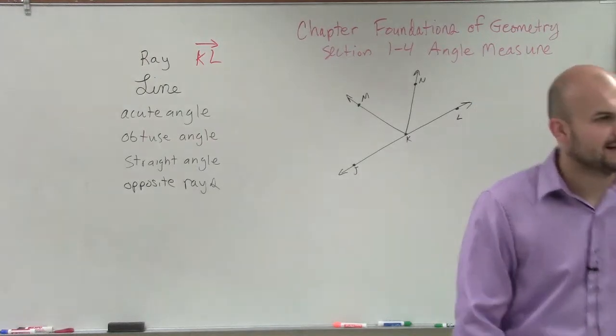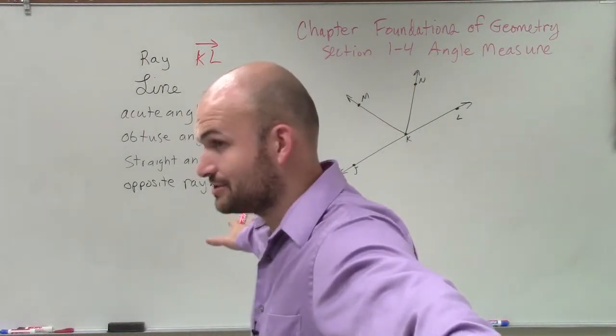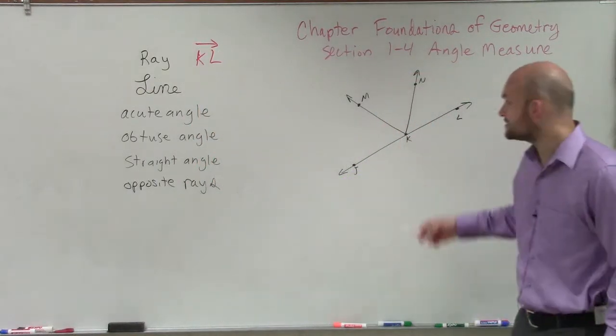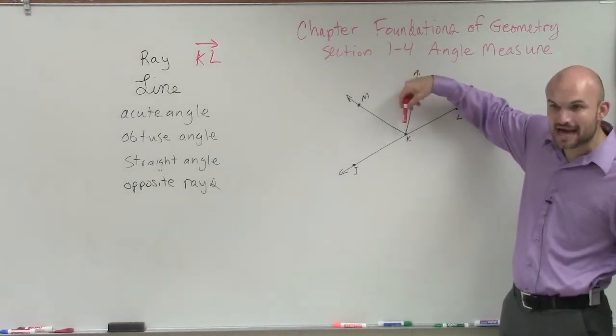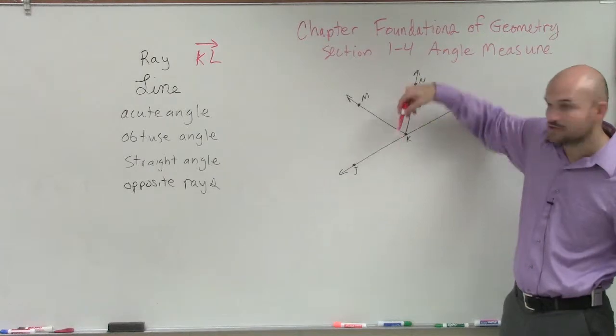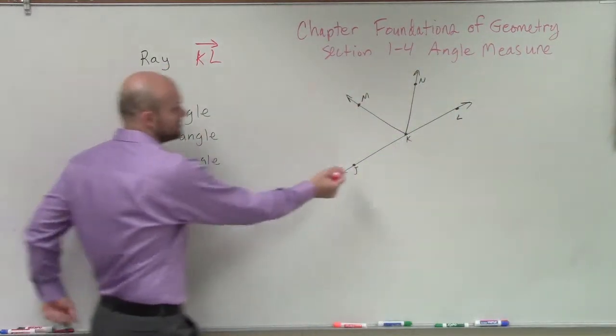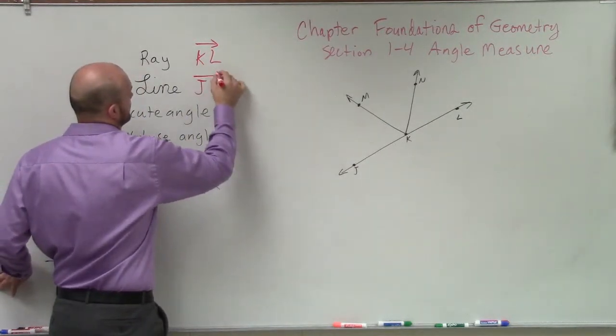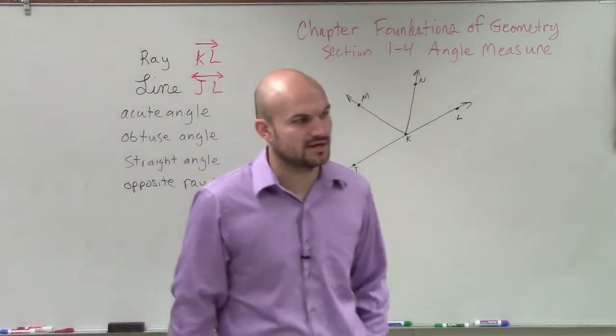The next one is a line. A line has to extend indefinitely in both directions. So there's actually only one answer we have here, because ladies and gentlemen, MK, that's not a line, because K stops. That's where it stops. So there's only one answer. Well, and there's a couple different ways we could write it. I'll say the line JL. And make sure when we're representing a line that we have both arrows going across.